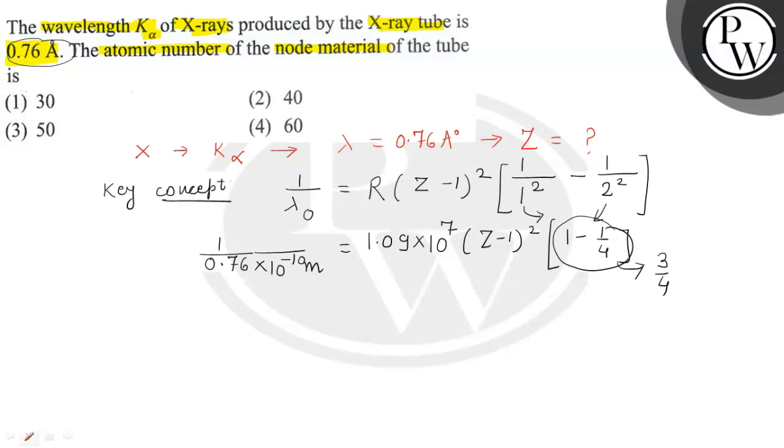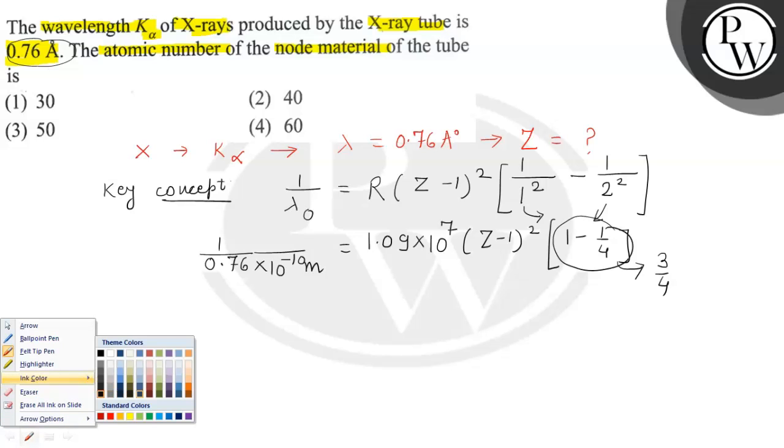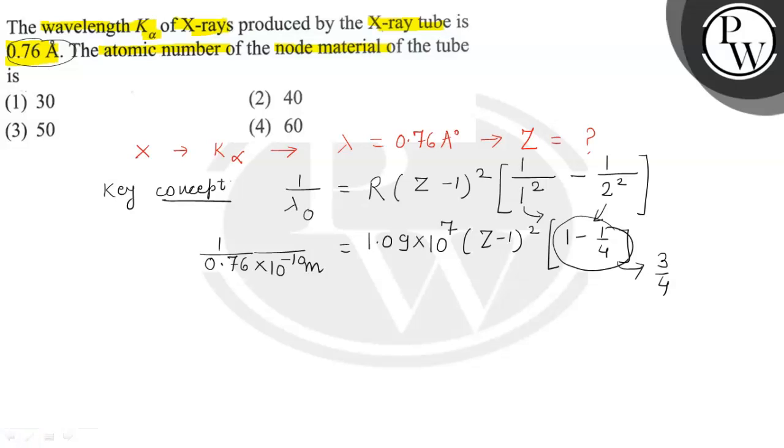So continuing, this is 1 upon 0.76 multiplied by 10 to the power minus 10, then this is 3 by 4, so it is multiplied by 4 by 3. Then the complete Rydberg's constant is cross multiplied in denominator, and this is equal to Z minus 1 whole square.